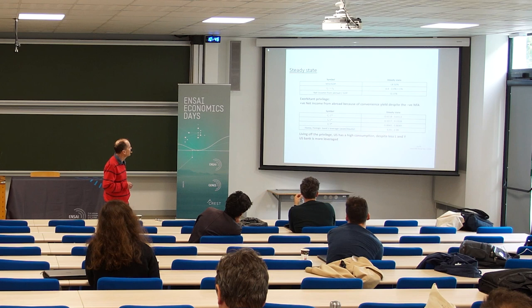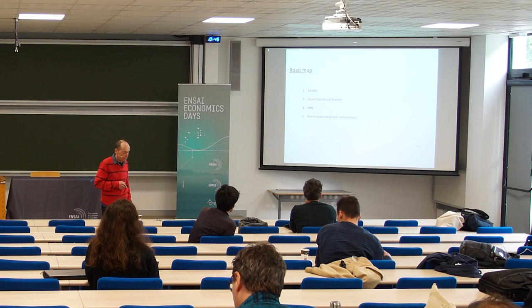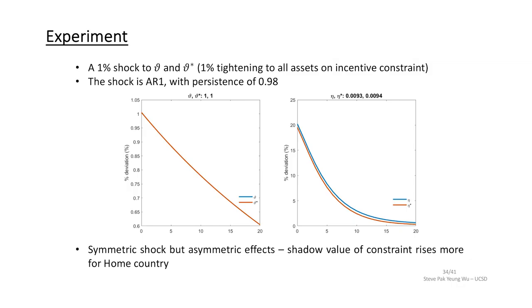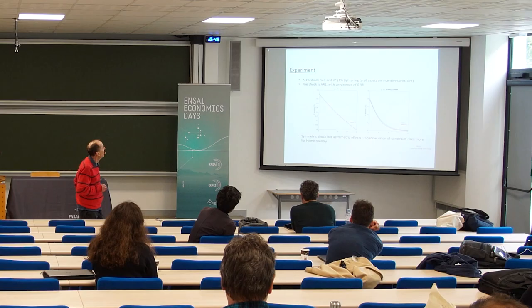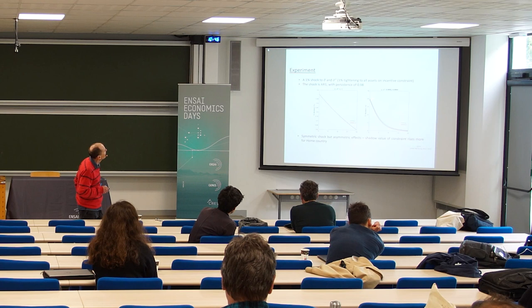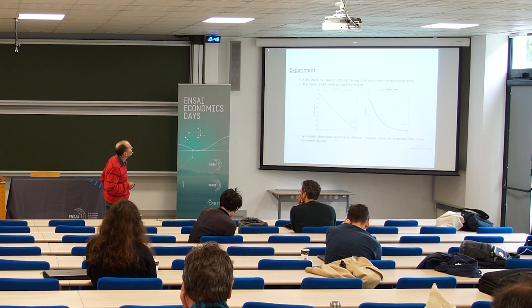Because it's an asymmetric calibration, the US has slightly higher consumption in steady state, slightly lower work effort, slightly lower GDP, and slightly higher leverage for the home bank than the foreign bank. We then look at a 1% uniform shock to the financial constraint — the incentive constraint — hitting all banks globally, not a specific US shock. It's an AR(1) with persistence of 0.98. It's a symmetric shock but has asymmetric effects: the shadow value on the US constraint rises more than on the foreign constraint.